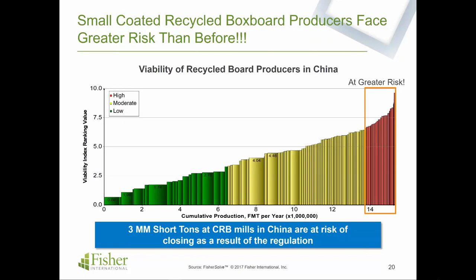This puts mills at risk. The viability chart for CRB producers in China shows about a 14 million metric ton market. The small mills, as Xiaomin mentioned, which may not meet the threshold to get waste paper, account for 3 million tons of capacity at risk of closing — which is probably part of the underlying reasoning for the regulation. As small mills come out of the market, you're left with the big giants. Consolidation and concentration of industry can have dramatic impacts of its own in terms of market dynamics.